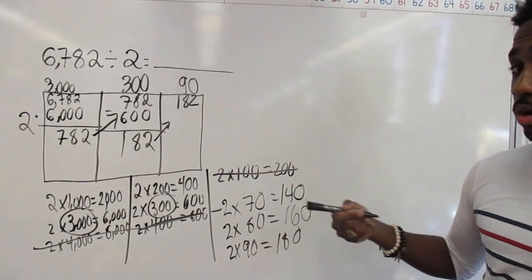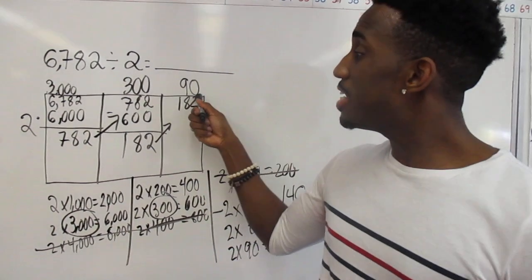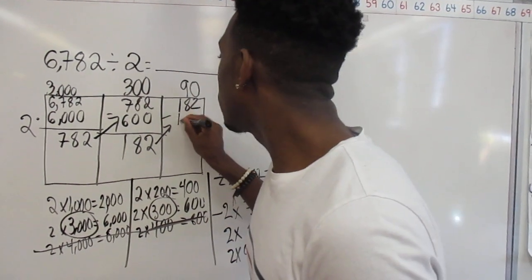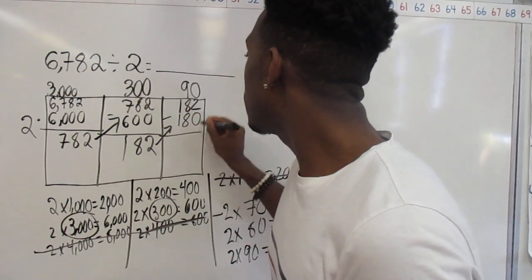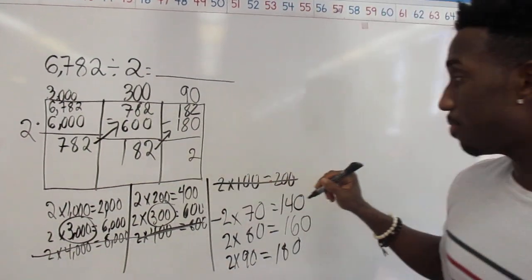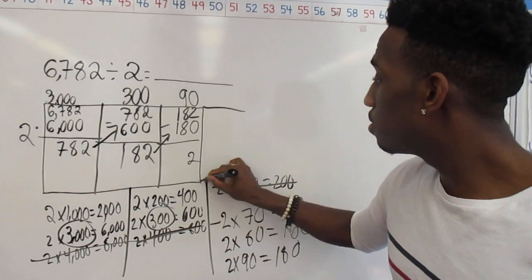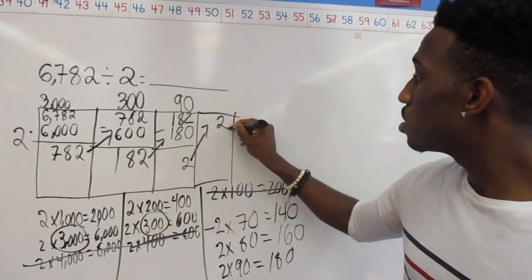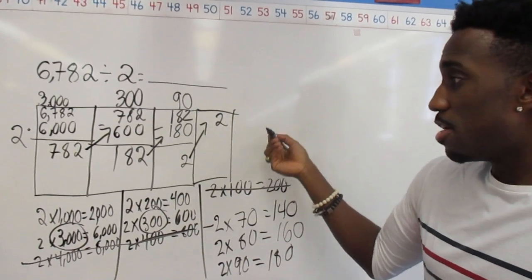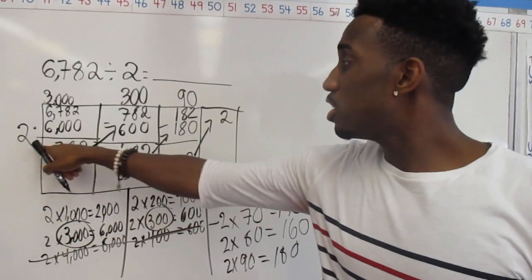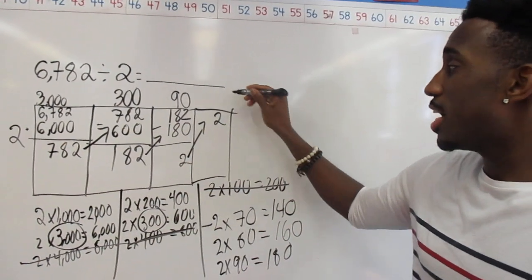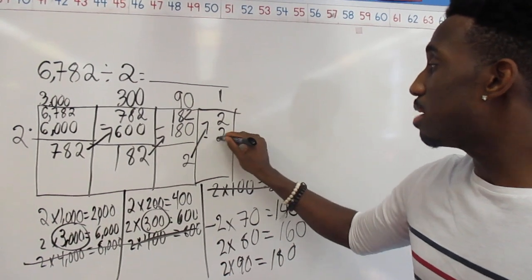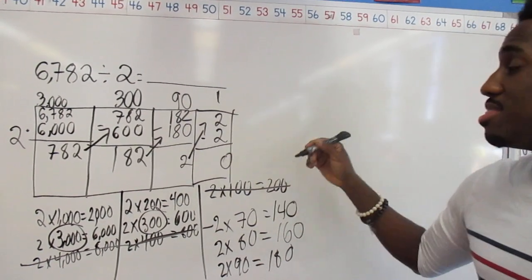Now I'm going to take away what I used. 90 times 2 gave me 180, and now I have 2 left. I can just draw another part of the rectangle and bring up my 2. Now I have 2 left — it's very simple. How many times can 2 go into 2? Just 1 time. 2 times 1 is 2, and now I have nothing left over.